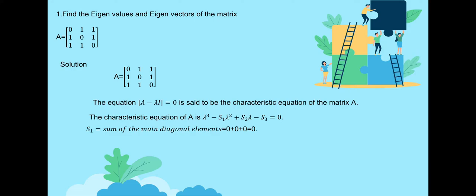In this session, we will find the eigenvalues of a symmetric matrix and its orthogonal eigenvectors. The characteristic equation is lambda cubed minus S1 lambda squared plus S2 lambda minus S3 equals 0. S1 stands for the sum of the main diagonal elements. Since the main diagonal elements are all 0, S1 equals 0.